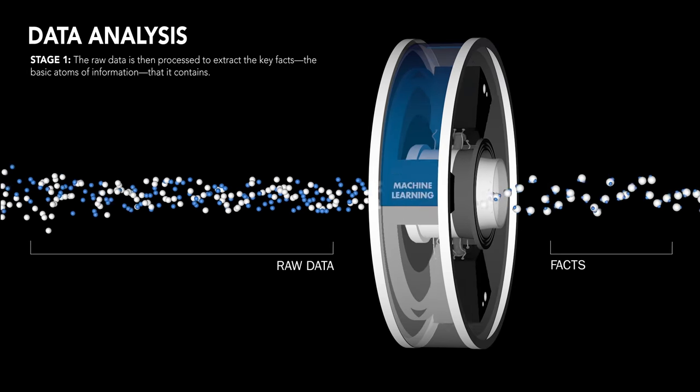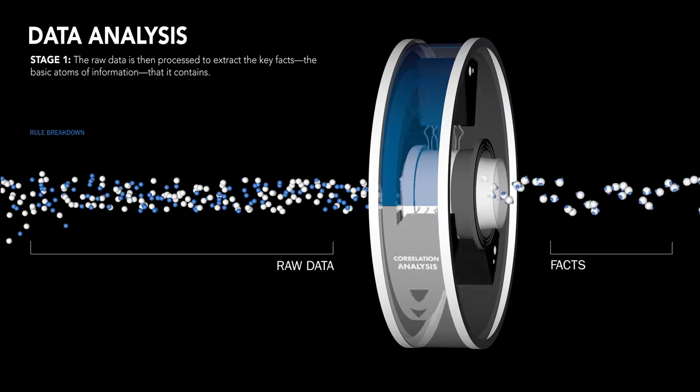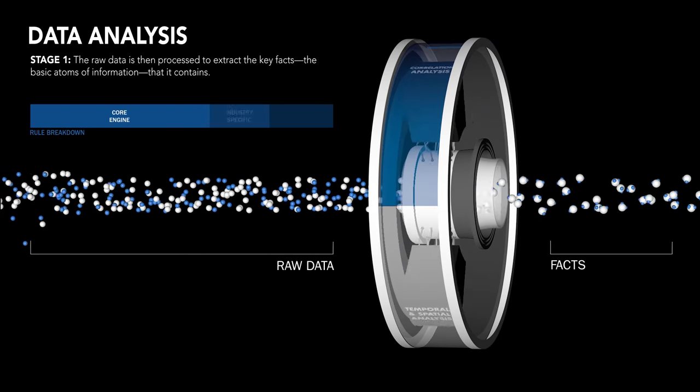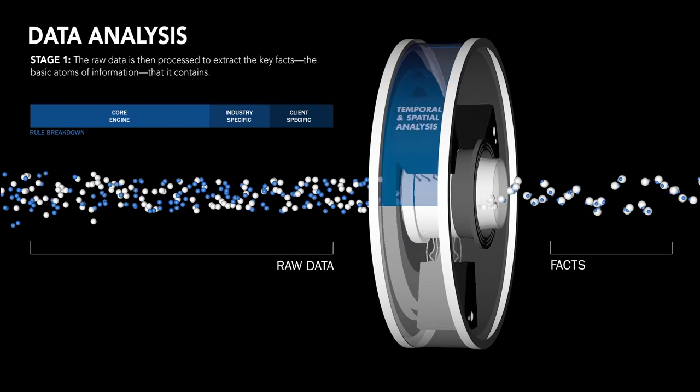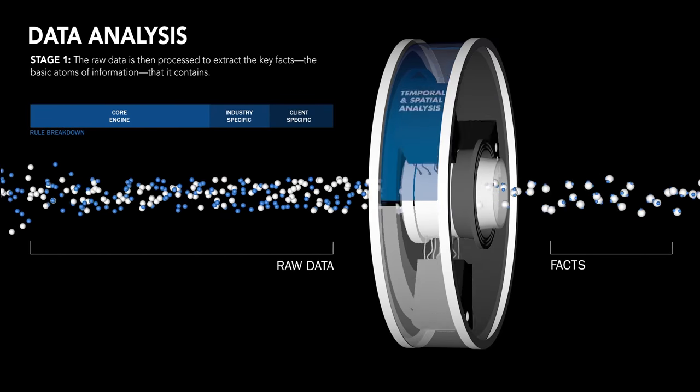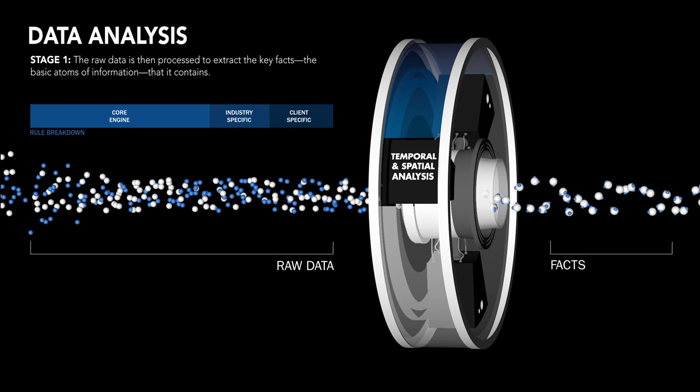For example, the NLG can calculate drivers and exceptions in global sales results, or use machine learning to understand large sets of raw machine sensor data and determine the meaning of patterns, trends or spikes.